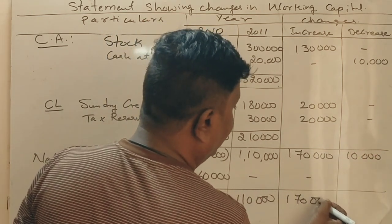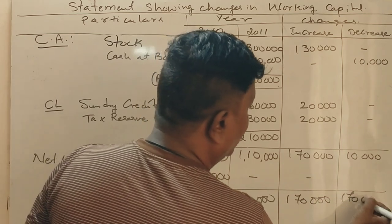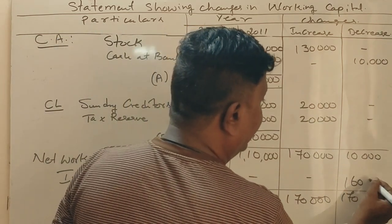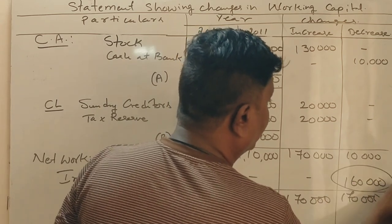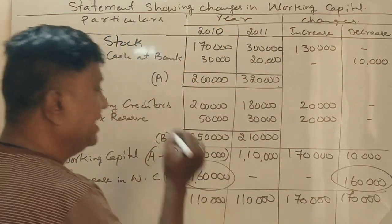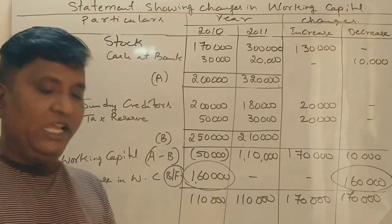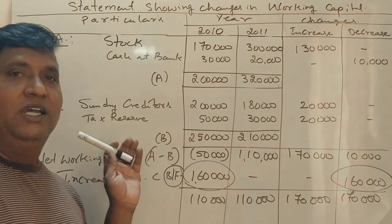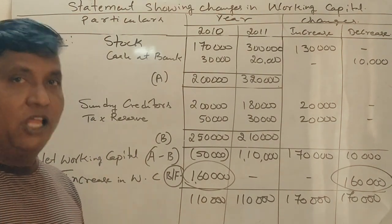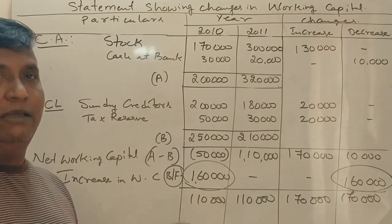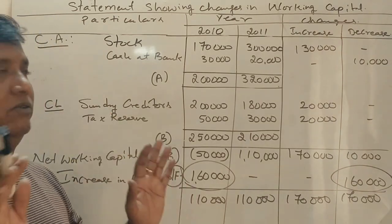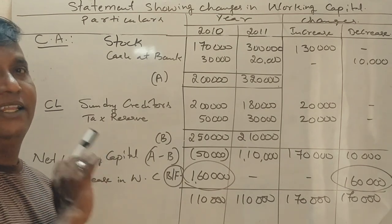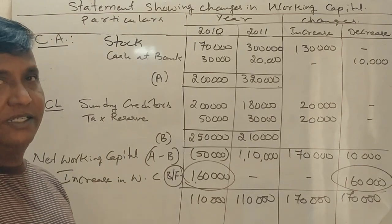Increase column total is 1,70,000, decrease column is 10,000, so the net is 1,60,000. This balancing figure is 1,60,000. This completes the statement of changes in working capital for 6 marks. The tax reserve is treated as a current liability. This is the 2014 question worth 6 marks.